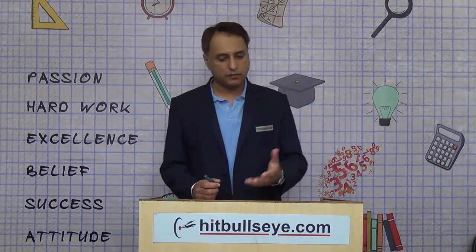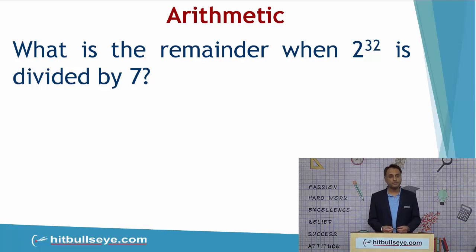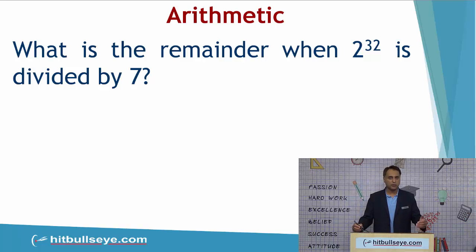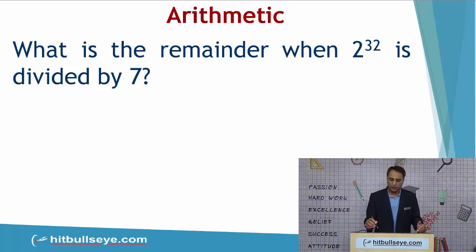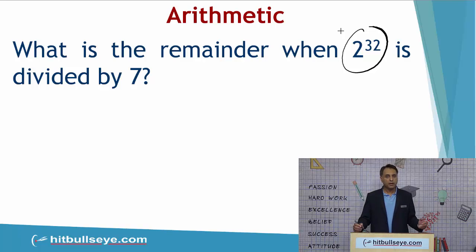Let's look at one such question from this module. The question is: what is the remainder when 2 to the power 32 is divided by 7? Apparently, overtly, this is a question on remainder theorem. We can easily see that 2 to the power 32 is a large number — the index 32 makes this a big number — and you have to check for divisibility by 7 and find the remainder.